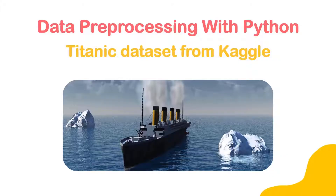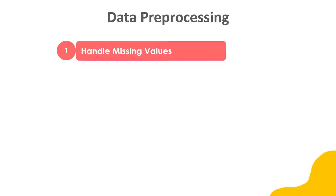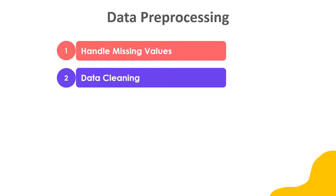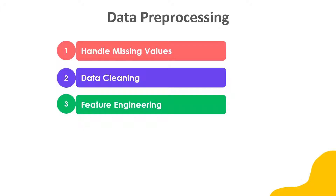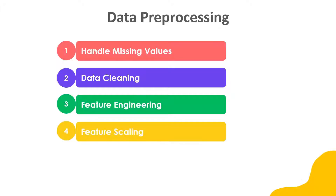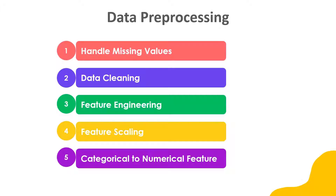It includes several steps. The first step is handling missing values — we will check for any missing values in the dataset and figure out how to handle them. The second step is data cleaning, which involves removing errors and inconsistencies from the data. The third step is feature engineering — we will create new features from existing ones to provide more valuable data to the machine learning model. The fourth step is feature scaling, where we standardize or normalize the range of independent variables to bring them to the same scale. The fifth step is to convert categorical features to numerical features, as machine learning models work better with numerical data.